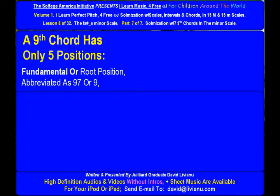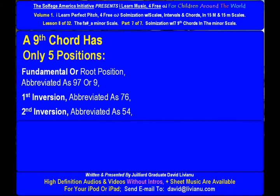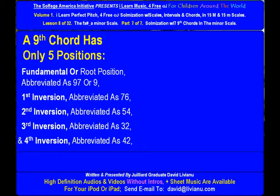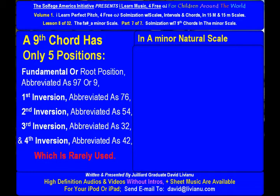Fundamental, or root position, abbreviated as 9-7 or 9. First inversion, abbreviated as 7-6. Second inversion, abbreviated as 5-4. Third inversion, abbreviated as 3-2. And fourth inversion, abbreviated as 4-2, which is rarely used.